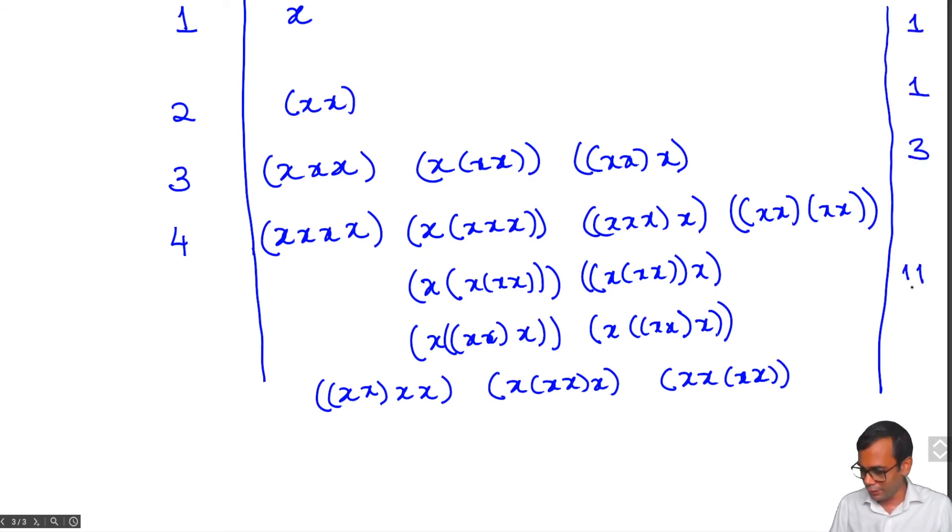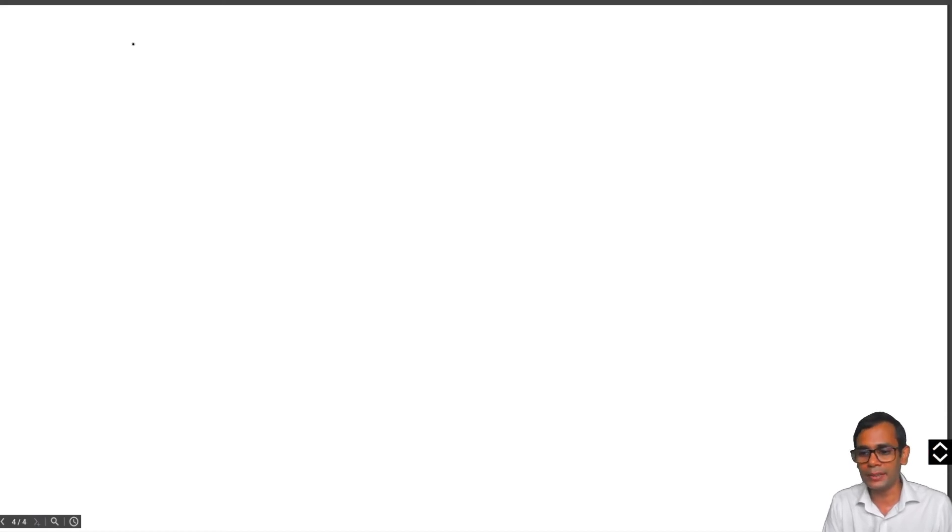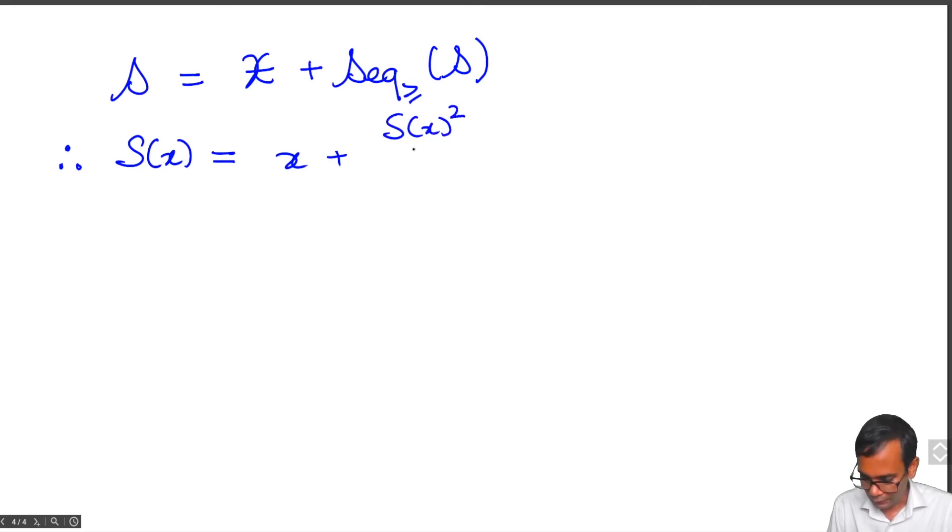Just from the definition we can try to write down a functional equation satisfied by this combinatorial class, which is that S equals x plus a sequence of length at least 2 in S. This means that the generating function is S(x) = x + S(x)^2/(1 - S(x)).